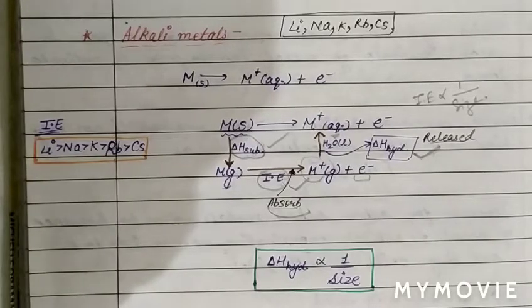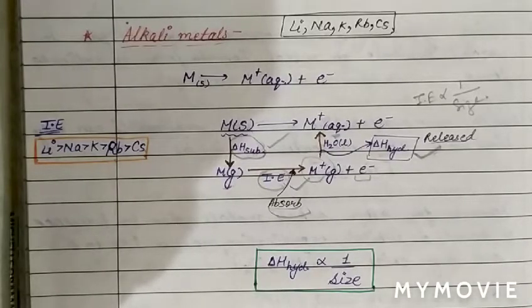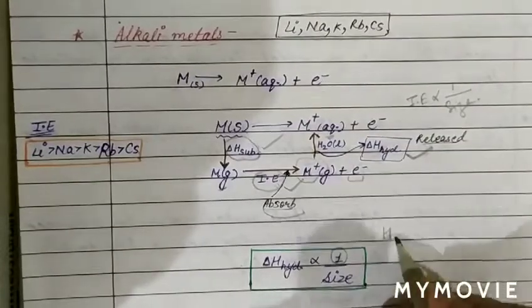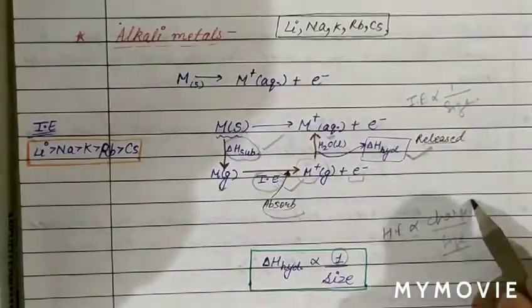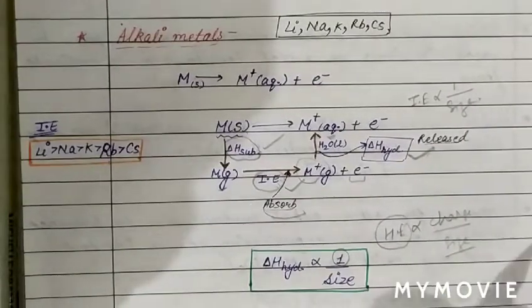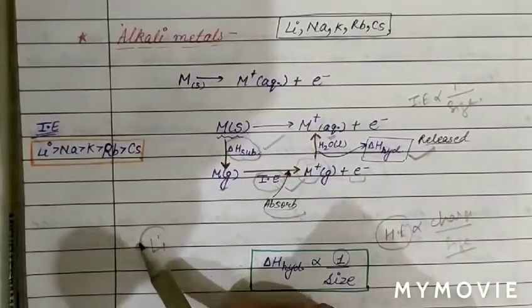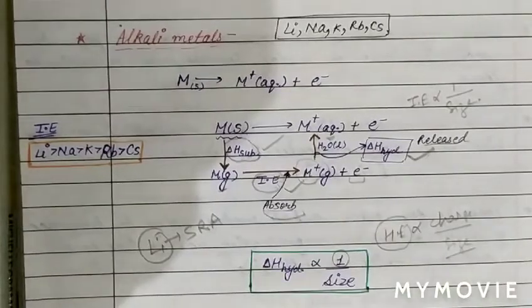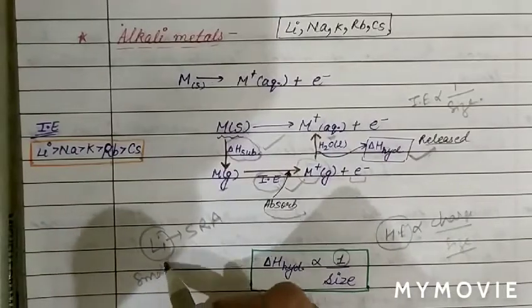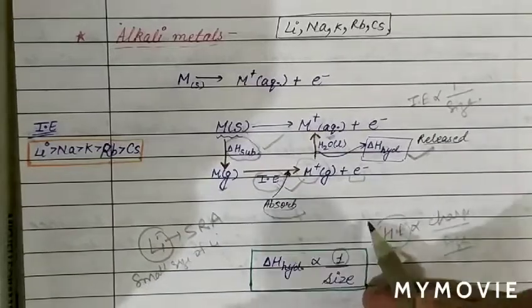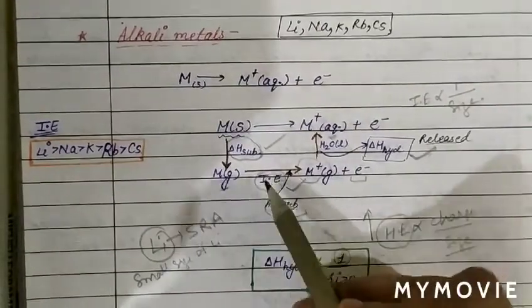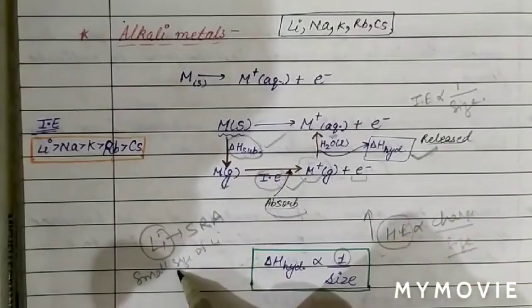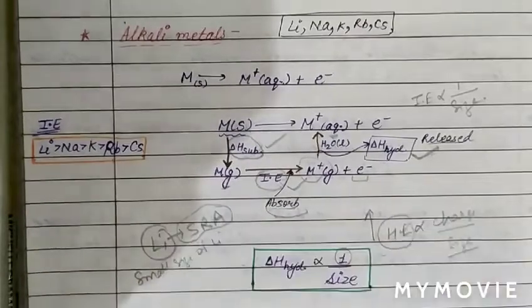Reducing property depends on the sum of three types of energy — sublimation energy, ionization energy, and hydration energy. Hydration energy is directly proportional to charge and inversely proportional to size. Lithium has the highest reducing power because due to its small size, lithium has the maximum tendency of hydration, which compensates for its high ionization energy. High enthalpy of hydration is the reason lithium acts as the strongest reducing agent.